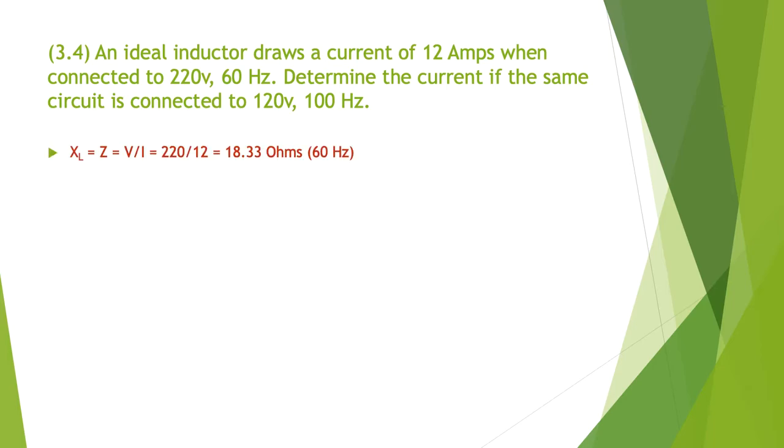The first thing is we're going to need to work out the inductive reactance. They've given us the overall circuit information, so we can say that XL is going to be equal to Z because it's the only thing in the circuit. V divided by I is going to give us the XL or the Z, which is 220 divided by 12 gives us an answer of 18.33 ohms. Now that's at 60 hertz.